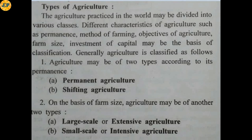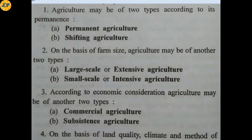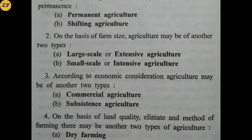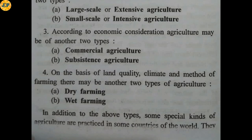Agriculture may be classified as follows: on the basis of permanence — permanent agriculture and shifting agriculture; on the basis of farm size — large scale or extensive agriculture and small scale or intensive agriculture; and according to economic consideration — commercial agriculture and subsistence agriculture.